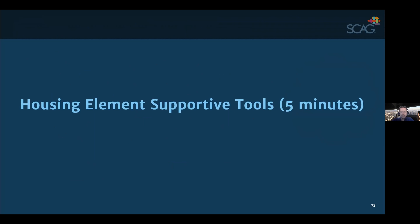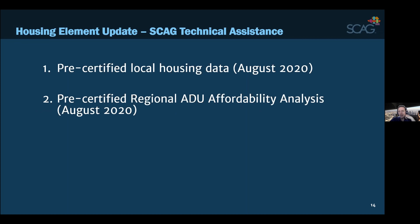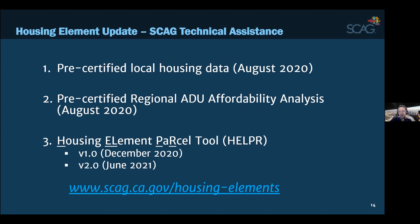Thanks so much, Tom. That's the great background on the overarching regional data platform and how it links with our other supportive and new planning tools. I want to spend a few minutes on what we're labeling housing element supportive tools. There's a gigantic lift for a lot of local jurisdictions in Southern California, given that the state has set an aggressive target of 1.3 million housing units into plans in the form of site inventories and housing elements by October 15th of this year. During 2020 we scrambled to pull together as much supportive information as we could.